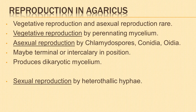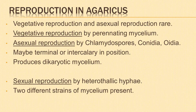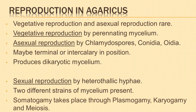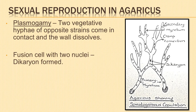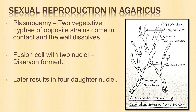In sexual reproduction, the somatic hyphae are heterothallic but sex organs are completely lacking. The two different strains of primary mycelium act as male and female sex organs. Somatogamous copulation takes place through plasmogamy, karyogamy, and meiosis. During plasmogamy, two vegetative hyphae of opposite strains come in contact with each other and the intervening wall dissolves. The fusion cell now possesses two nuclei and constitutes a dikaryon.